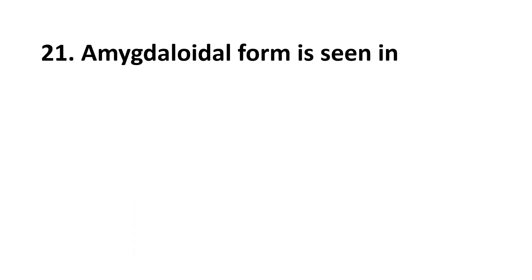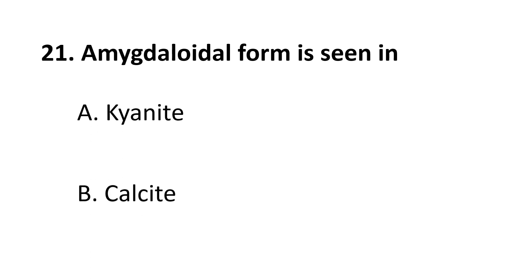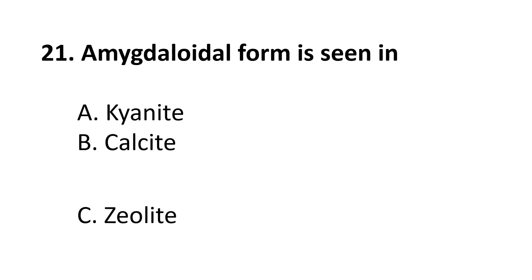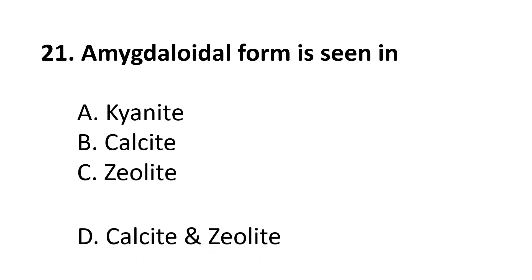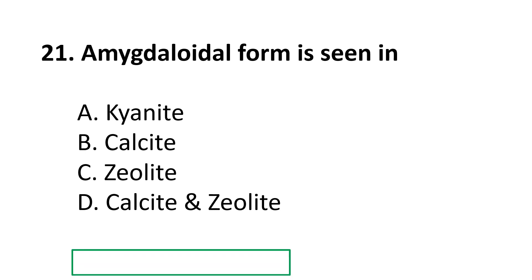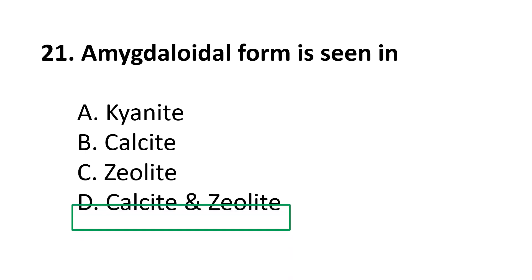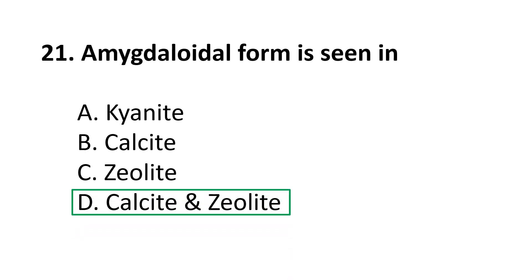Question 21: Amygdaloidal form is seen in — A. kyanite, B. calcite, C. zeolite, D. calcite and zeolite. The correct answer is D, calcite and zeolite. Both exist in amygdaloidal forms; even some silica minerals also exist in the amygdaloidal form.